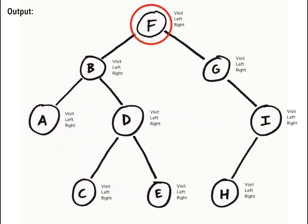Let's start at the top with F. First, we visit the node and print its value. We then traverse the left subtree.